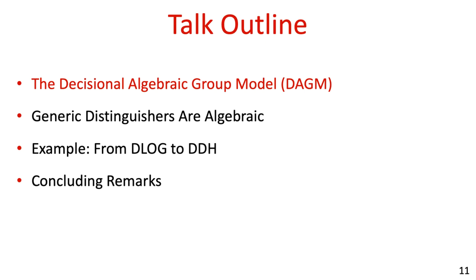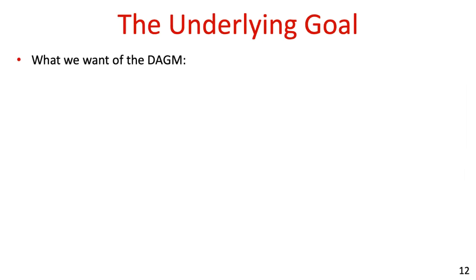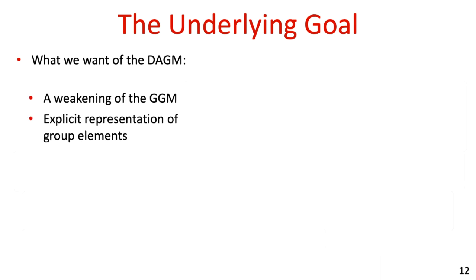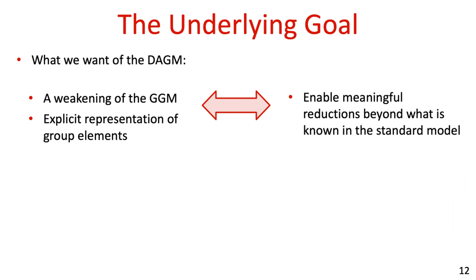Let's start by presenting our model. Before that, let's consider what we want the model to satisfy. On the one hand, in order to keep with the spirit of the algebraic group model, we would like our model to be a weakening of the generic group model, and concretely to allow adversaries to receive the explicit representation of group elements. On the other hand, we would like the model to be stronger than the standard model, enabling meaningful reductions beyond those known in the standard model.